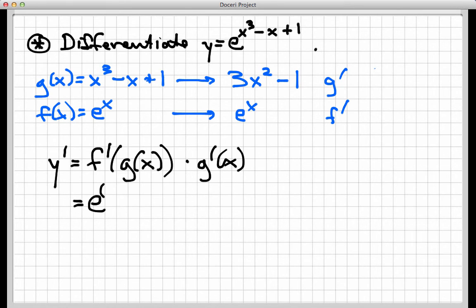f prime is e to the x. And in place of the x, I'll put just a blank. And what goes into that blank, what gets plugged in for x, is g. The original g function, that's here. That's x cubed minus x plus 1. And then I need to multiply all that by g prime of x, and we have that right up here.